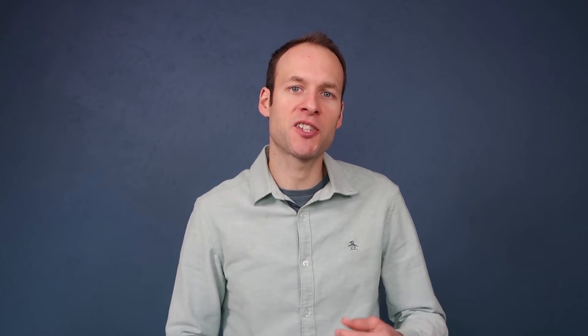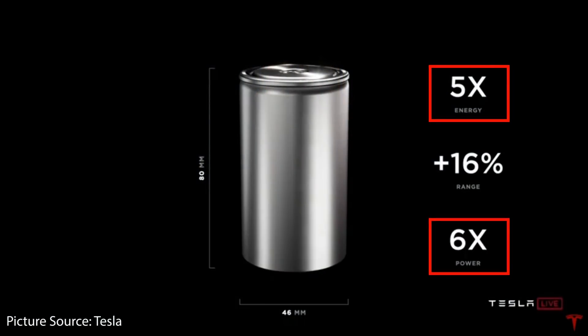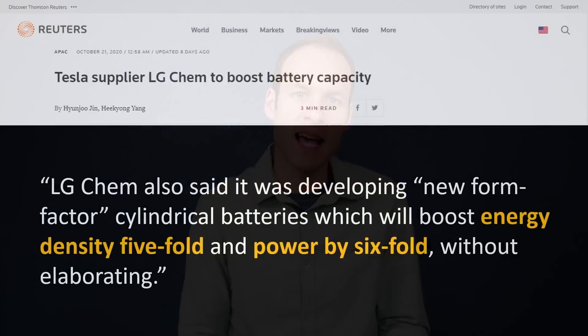Those numbers of course sound very familiar if you watched Tesla's Battery Day, where Tesla said this new cell format had five times the energy of the 2170 cell and six times the power over the 2170 cell.